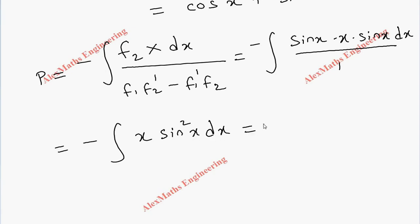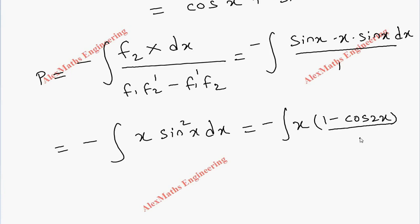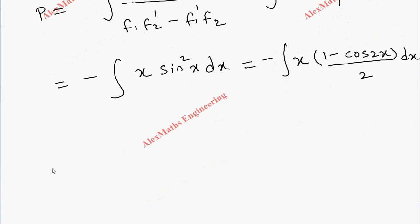For integration, we use the trigonometric identity sin²x = (1 - cos 2x)/2. Taking 1/2 outside, we get p = -1/2 · ∫(x - x cos 2x) dx.